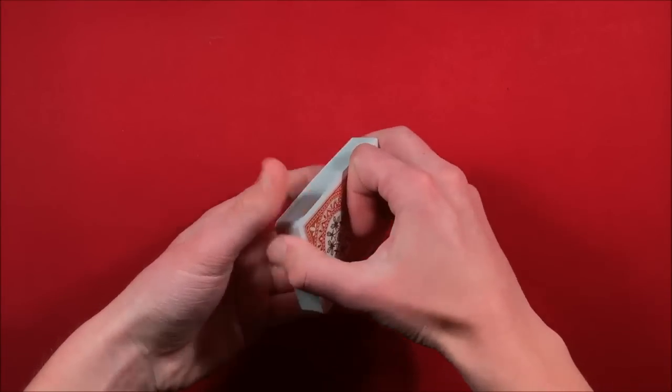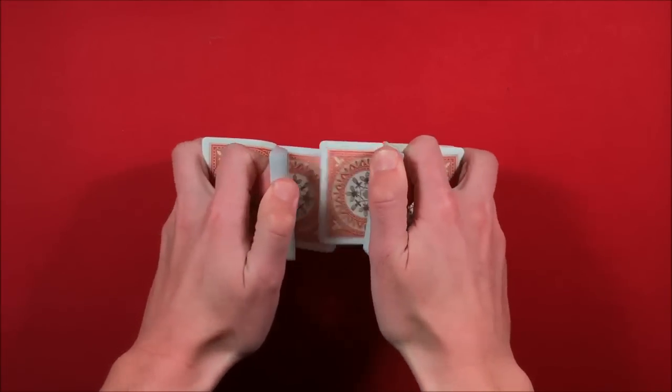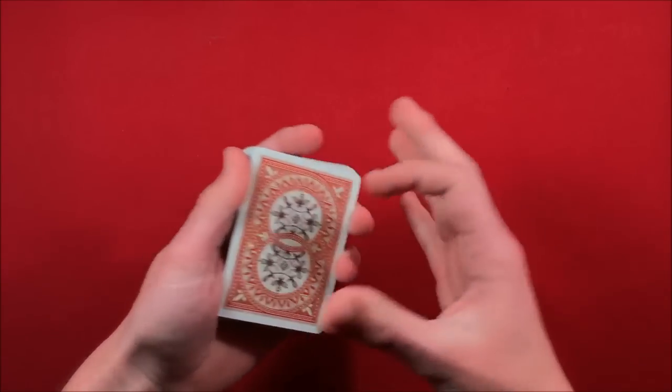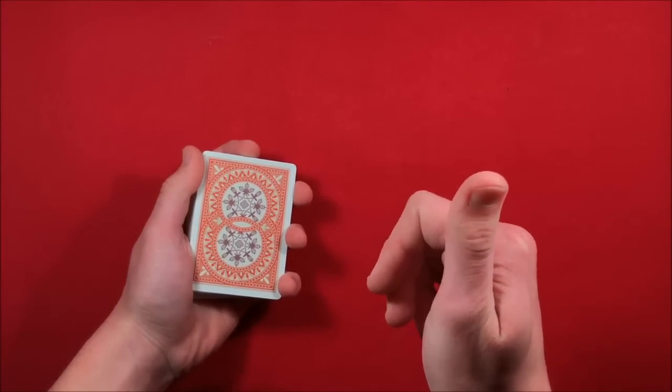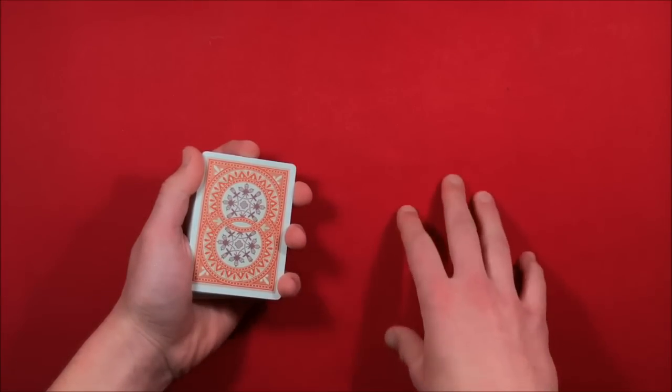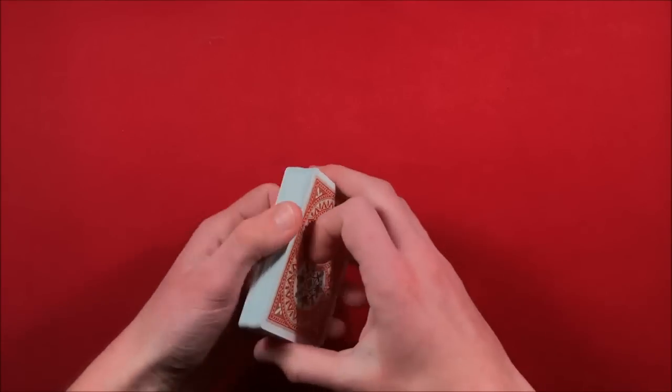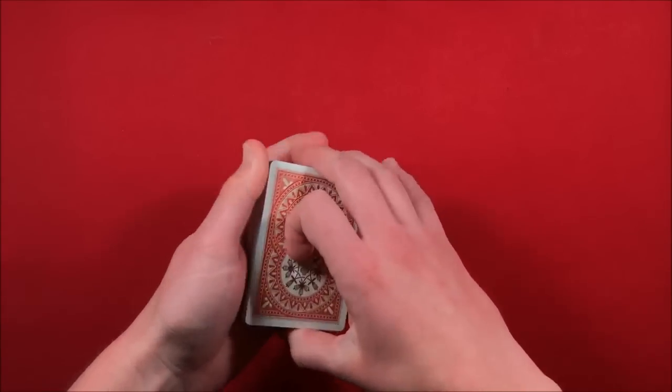To begin, the first thing you want to do is you could have the spectator shuffle up a borrowed deck or anything—they could shuffle it up. At this point all you have to do is get a double lift. I'm going to leave a link on the screen for the double lift because if I explain it this video takes too long, and the video I already have is a lot more detailed.